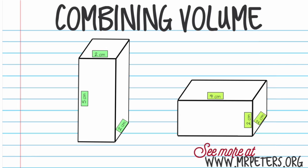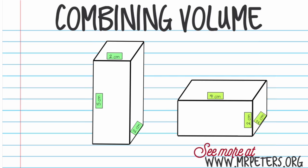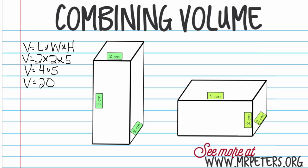We want to find the volume of this one and the volume of this one. For the first prism, write out your formula: volume equals length times width times height. Length is two, width is also two, and height is five. The order doesn't really matter because of the commutative property of multiplication. Volume equals two times two, which is four, times five — so the volume equals twenty centimeters cubed.